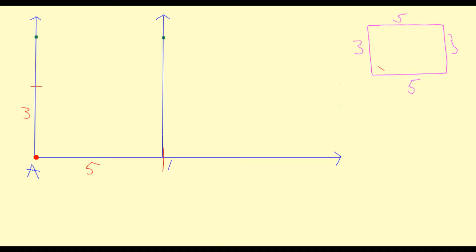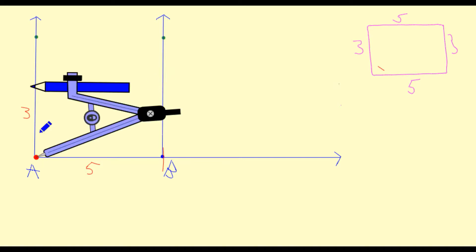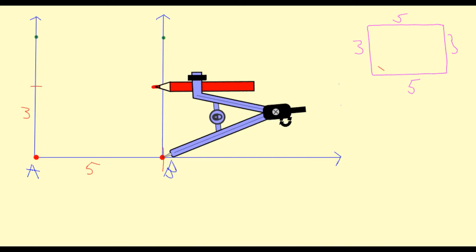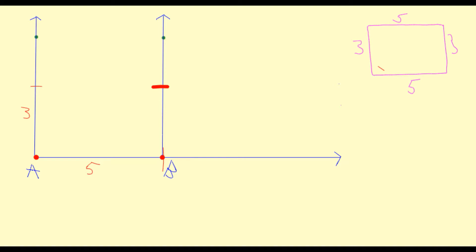I'm marking angle B where my arc intersects the original ray line and putting a dot there to represent point B. Next I need to create a length of 3 on this line, so I'm setting my compass to B and marking off 3. Our compass is already preset to 3 from the previous side, so I'm moving it over and drawing my arc. I've now measured a line of 3 centimetres and I'm marking that in. For the final side I'm going to use my ruler and draw a line from this arc to the other arc, closing off my rectangle.